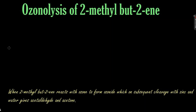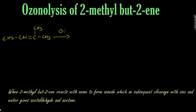We are going to prepare both acetone and acetaldehyde in this reaction. The structure is CH3-CH=C(CH3)-CH3, and this is known as 2-methylbut-2-ene. We are going to react it with ozone, that is O3.